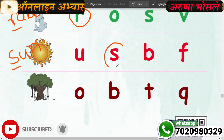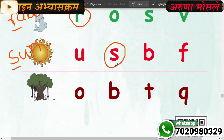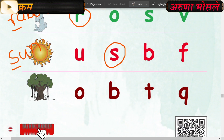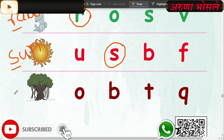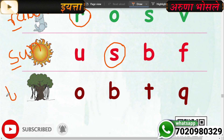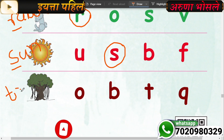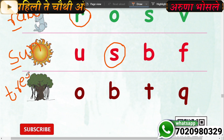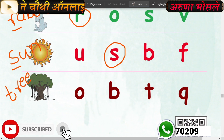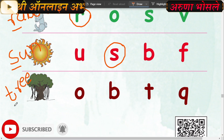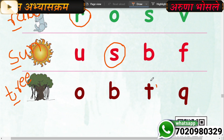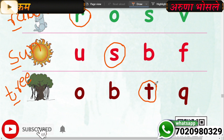Now incircle the letter S. Very good. Now next question - what is this? This is tree. T-R-double E, tree. Which is the first letter? First letter is T. Where is T? Here is T. Now incircle the letter T. Very good.